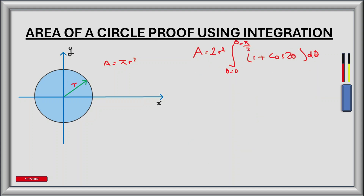Our area can now be written as follows: the area of the circle is 2r squared multiplied by the integral from theta equals 0 to theta equals pi by 2 of 1 dθ, plus 2r squared multiplied by the integral from theta equals 0 to theta equals pi by 2 of cos 2 theta dθ.